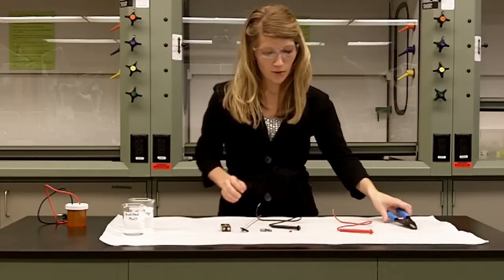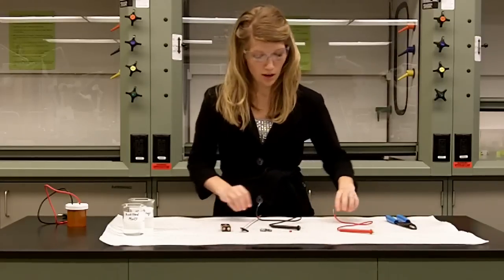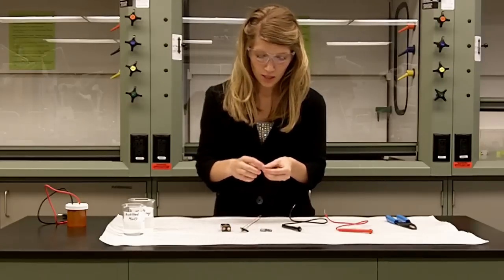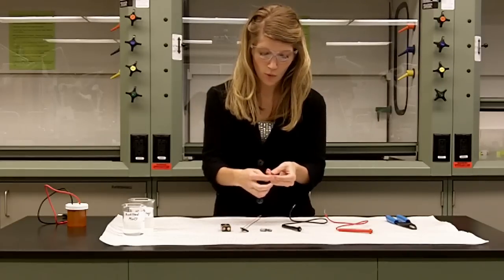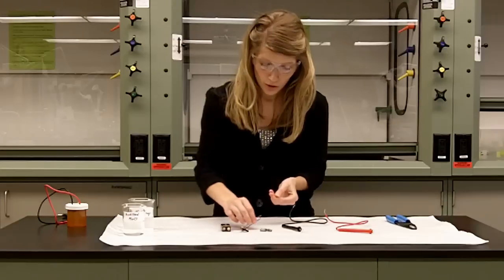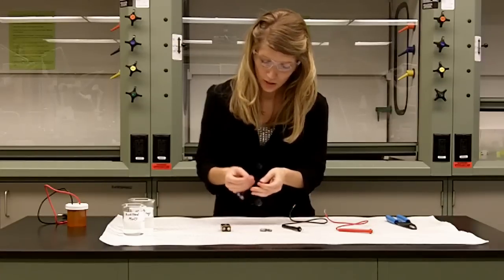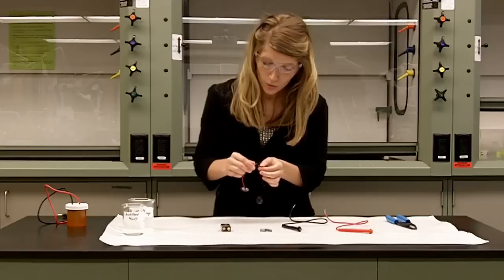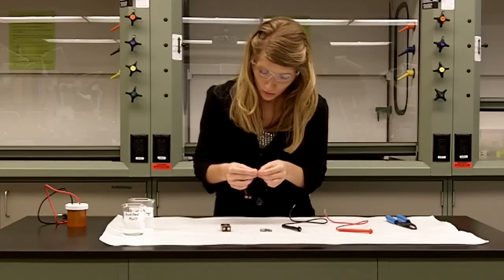Alright, so now we have to build our circuit. So, first we have our LED and you need to identify the longer wire. Once you find the longer side, you can then take your battery snap connector and twist it around the longer portion.